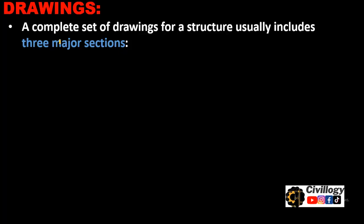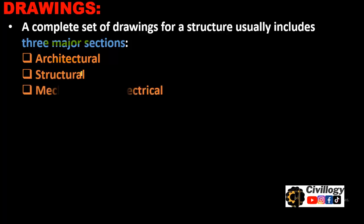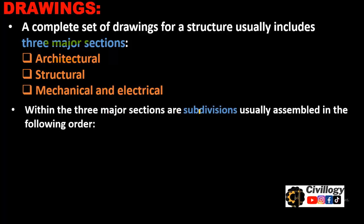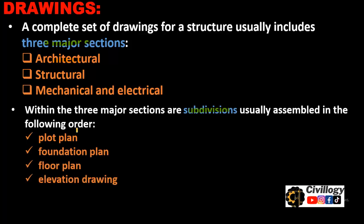A complete set of drawings for a structure usually includes three major sections, which I discussed in detail in my previous video — the link is given in the description. The three major sections are: first, architectural; second, structural; third, mechanical and electrical. Within these three major sections there are subdivisions, usually assembled in the following order: plot plan, foundation plan, floor plan, elevation plan, sectional drawing, and detailed drawings.